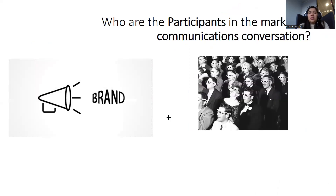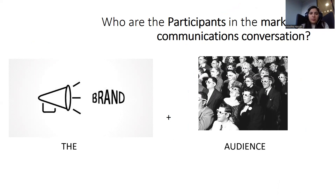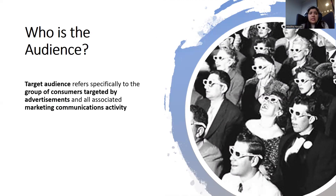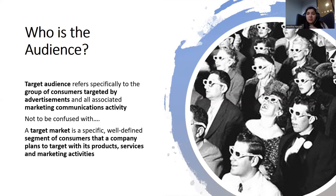There are two basic participants in marketing communication: the sender and the receiver. The sender is mostly the brand promoting their product, and the audience is normally the consumers who are looking for that product. Audience refers specifically to the group of consumers targeted by advertisements and all associated marketing communications activity — not to be confused with a target market. A target market is a specific, well-defined segment of consumers that a product plans to target with its products, services, and marketing activities.